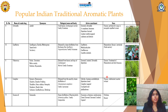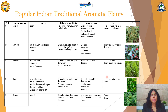Next drug is Citronella, which is called as Jambhir, obtained from the fresh leaves of Cymbopogon nardus, Family Gramineae. It contains geraniol, citronellal, camphene, limonene, borneol, linalool, and eugenol. It acts as a flavor and stimulant, used in perfumes, and is also used as a mosquito repellent. Most mosquito repellent products available in the market are added with citronella.